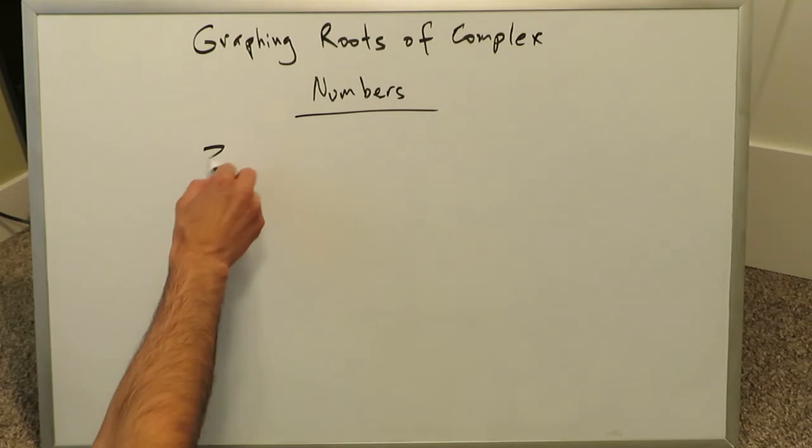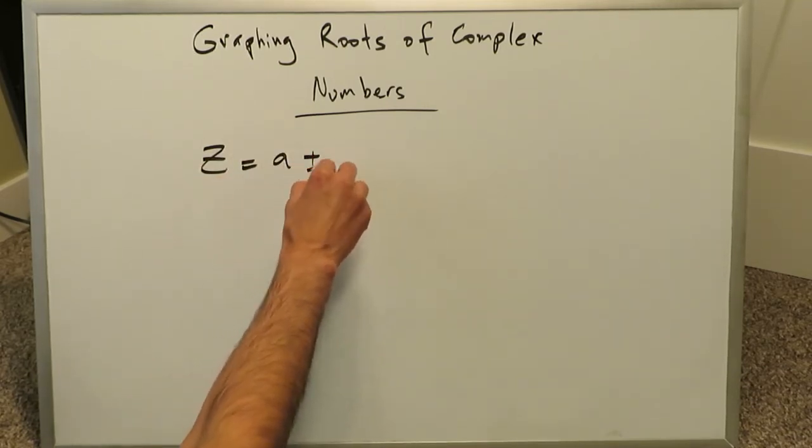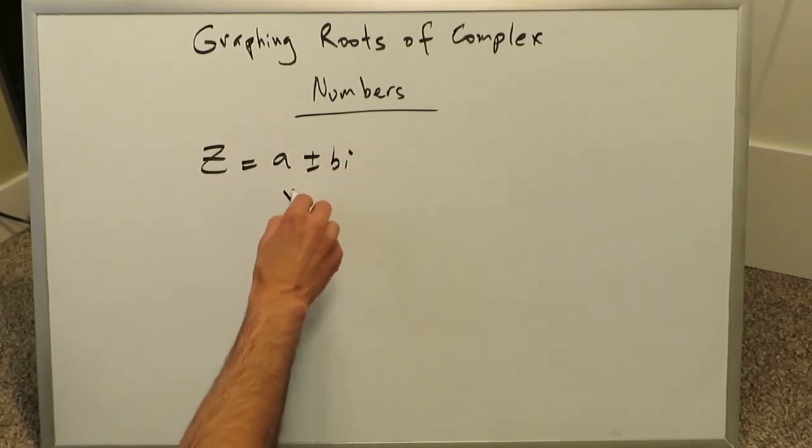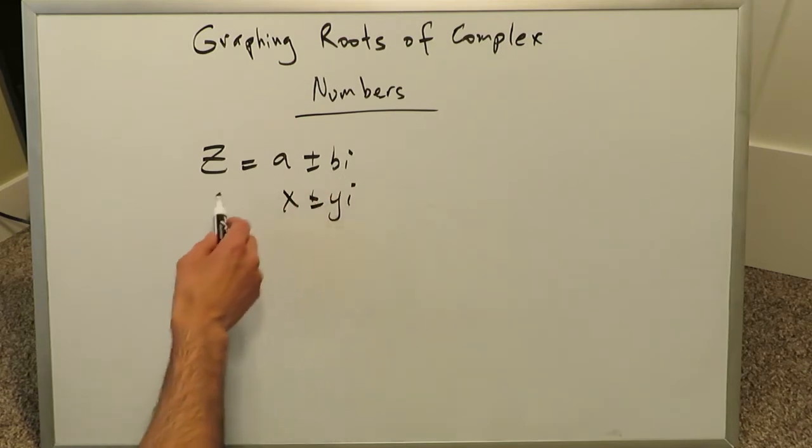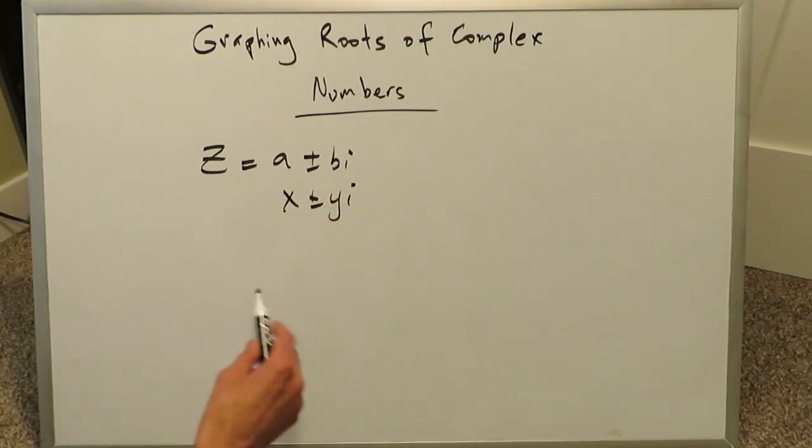You know that a complex number z is equal to a plus or minus bi, or you can even say x plus or minus yi. It doesn't matter how you annotate it, and then you know a complex number can be converted into a polar or its trigonometric form.